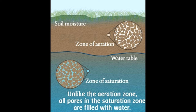The zone of aeration and zone of saturation are two sub-earthen zones that are associated with the storage and replenishment of groundwater. Here, we shall learn about these two layers and find out the difference between them.